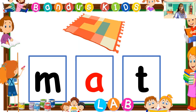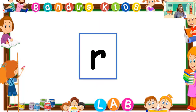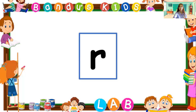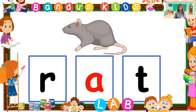Let's proceed to the next letters. What letter is that? It's letter R. What is the sound of letter R? Ra. Next letter is A, then T. Let's add the sounds of the three letters: Ra, A, T — what is the word? Rat. Very good.